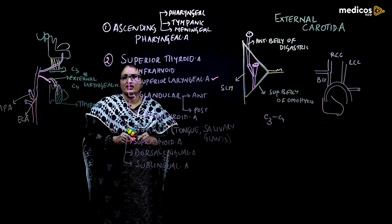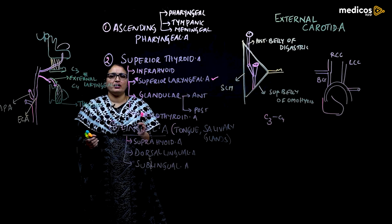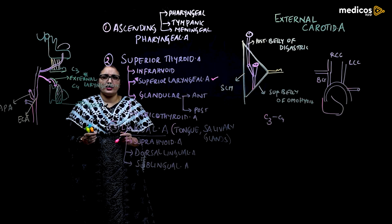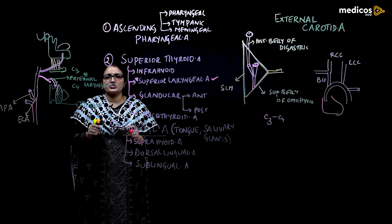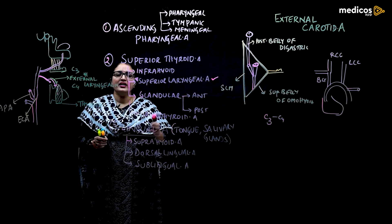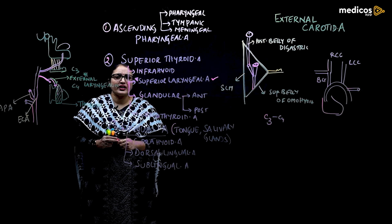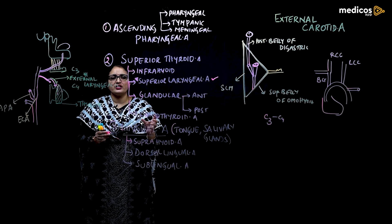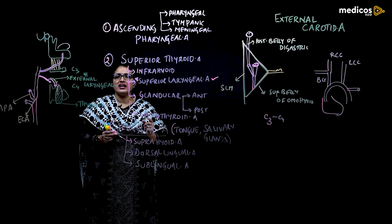These are the three main branches. From the medial side, the ascending pharyngeal artery supplies the pharynx through pharyngeal branches, the tympanic membrane through tympanic branches, and the meninges through meningeal branches. The superior thyroid artery gives an infrahyoid branch and a superior laryngeal artery, accompanied by the external laryngeal nerve — both are very important during thyroidectomy. It also gives glandular and cricothyroid branches, supplying the larynx and thyroid gland. The lingual artery supplies the tongue and salivary glands through the suprahyoid, dorsal lingual, and sublingual arteries.